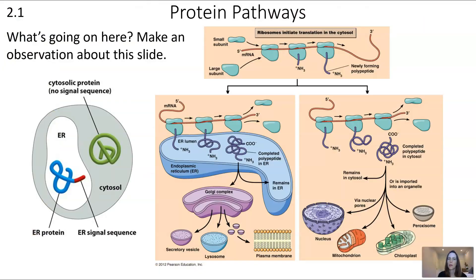Once you're familiar with the structure and function of all the different organelles, it's important to understand how they work together. This slide is titled Protein Pathways, so we're looking at the different journeys a protein can make from beginning to end. The top orange box shows that ribosomes initiate translation in the cytosol — the ribosome reads the mRNA and begins producing a protein, visible as a newly forming polypeptide. Then one of two things happens, as indicated by the branching arrow.